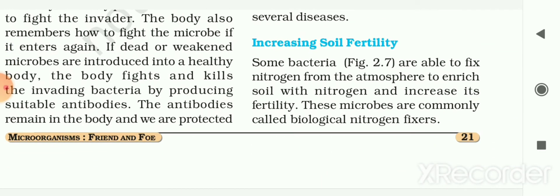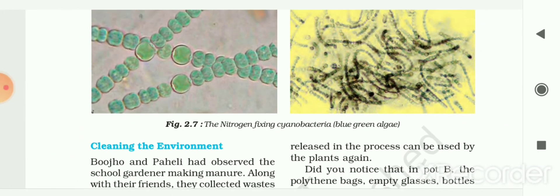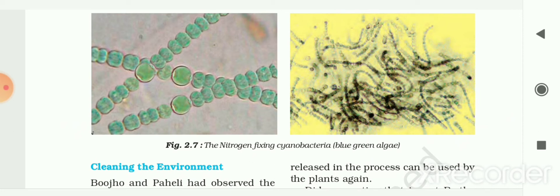The next use is increasing soil fertility. Some bacteria are able to fix nitrogen from the atmosphere to enrich the soil with nitrogen and increase its fertility. These microbes are commonly called biological nitrogen fixers. The nitrogen-fixing cyanobacteria, that is blue-green algae, fixes the atmospheric nitrogen into the soil.